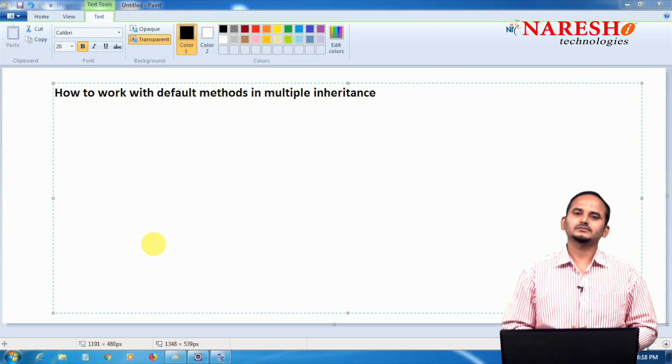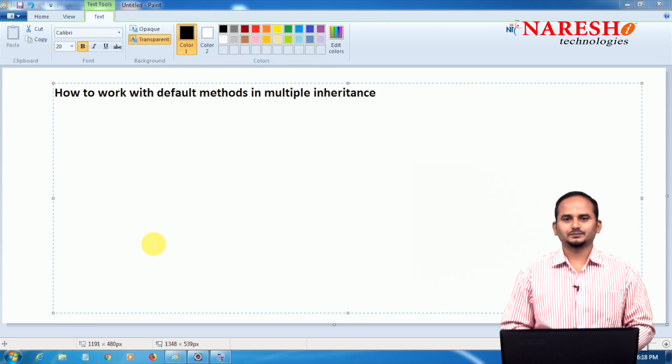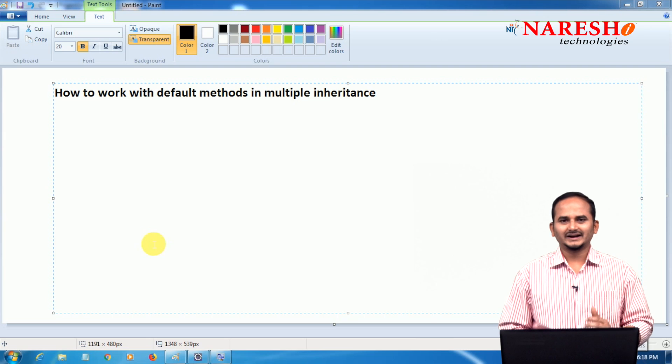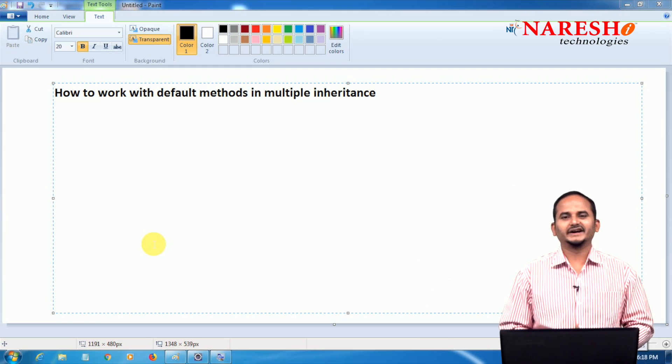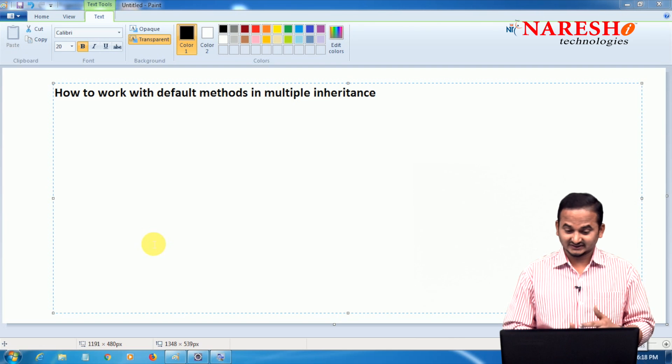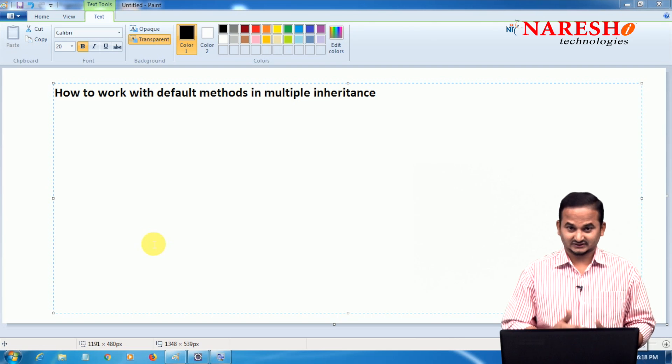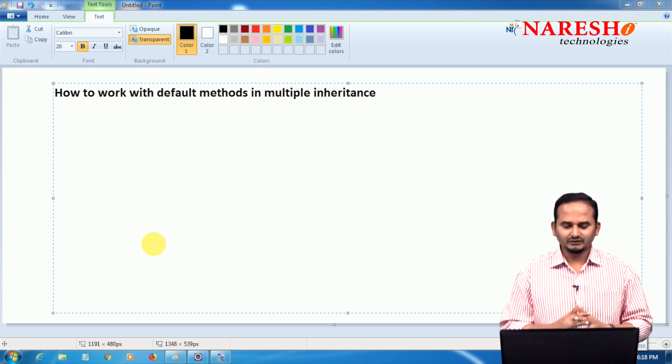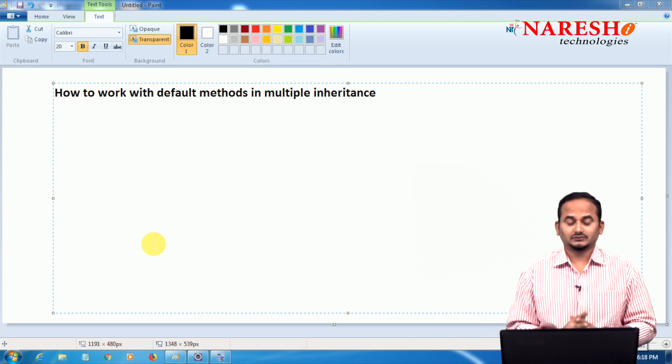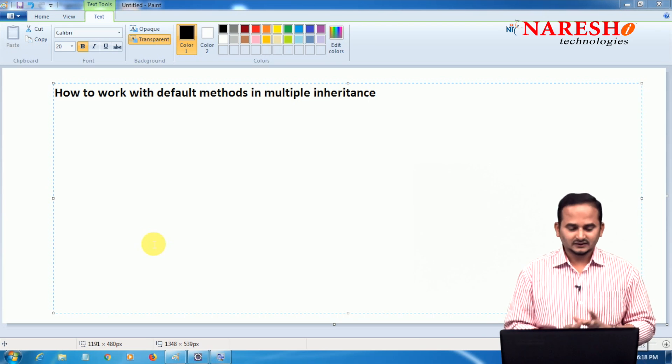Basically, Java does not support multiple inheritance through classes, but we can achieve it through interfaces. Our intention is not simply multiple inheritance, but default methods with multiple inheritance. How can we overcome this problem?